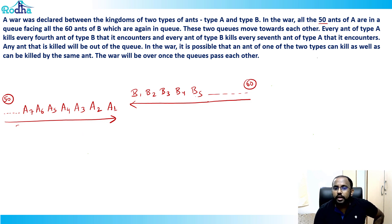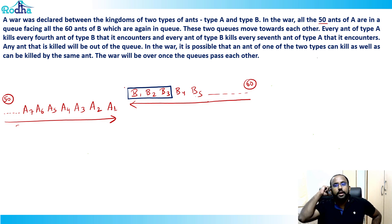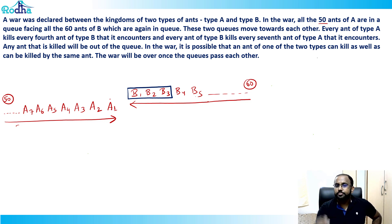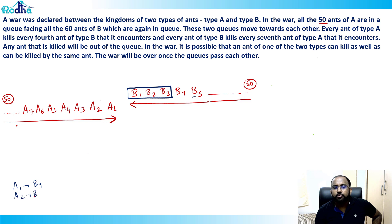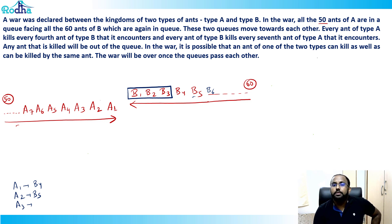That means b1, b2, and b3 will always pass through without being killed. For ant a1, b1, b2, b3 pass, so b4 is the fourth ant — a1 kills b4. For a2, b1, b2, b3 pass and b5 is fourth — a2 kills b5. For a3, since b4 is killed by a1 and b5 by a2, b6 is the fourth ant — a3 kills b6, and so on.